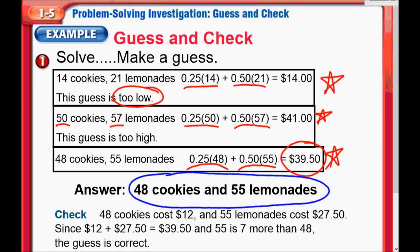Now they say to check the answer. You want to check to make sure your answer is right. 48 cookies cost $12 — 25 cents times 48 is $12 — and the 55 lemonades end up costing $27.50. Put those together, you get exactly $39.50. Plus, 55 is indeed seven more than 48, so our guess is correct.